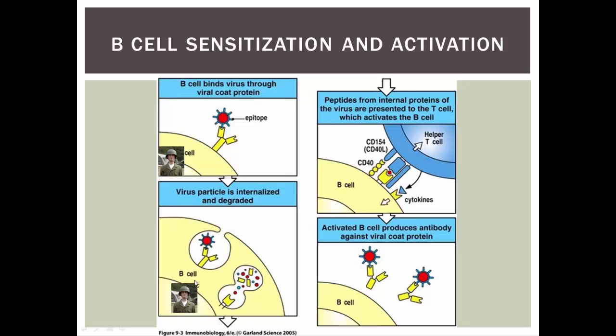This Steve Rogers is going to bring in that antigen, process it, and then present it on its MHC class II, just like an antigen-presenting cell would do. Still at this point, he's Steve Rogers — we haven't changed anything. He's still sensitized; he just doesn't have that strength behind him to do anything. Until a helper T cell comes along, he's stuck in this Steve Rogers phase — sensitized but can't do anything.